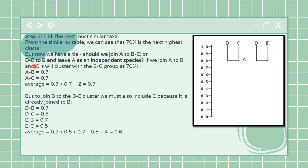Should I join A to B and C because A was very much similar to B and C, or should I join D and E to B and leave A as an independent species? For this kind of situation we always take the average.